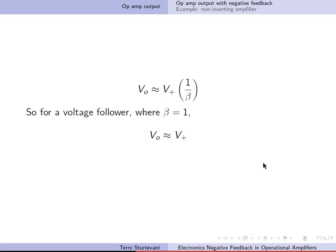So for a voltage follower, where beta equals 1, V out equals the voltage at the non-inverting input, as expected.